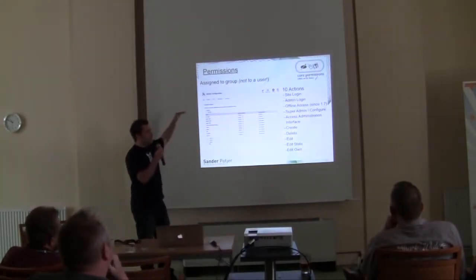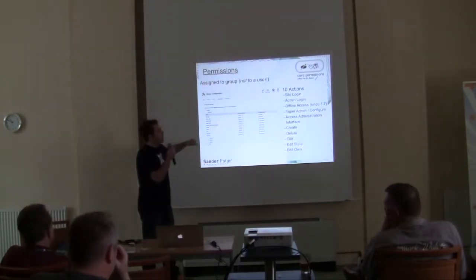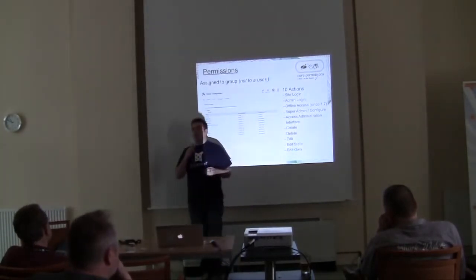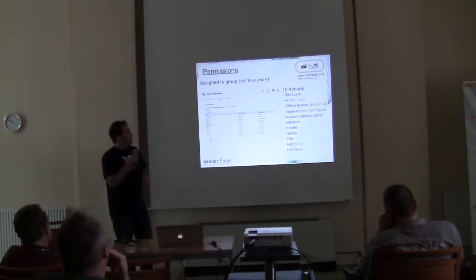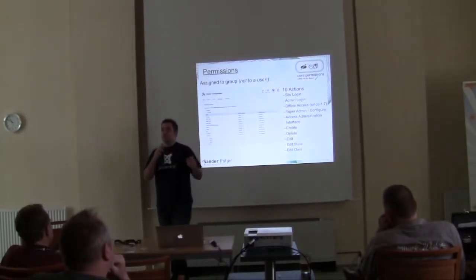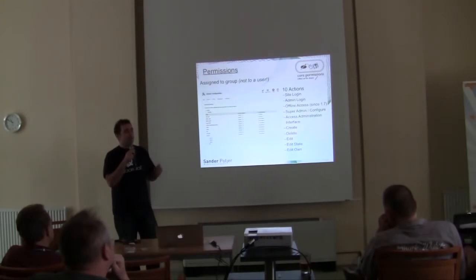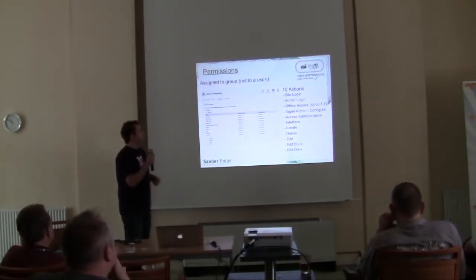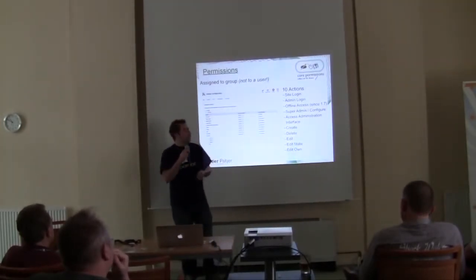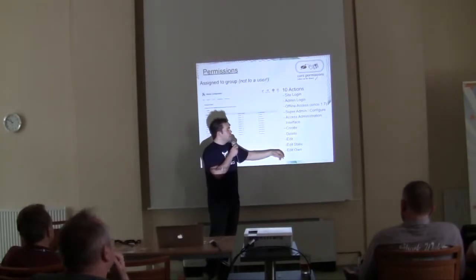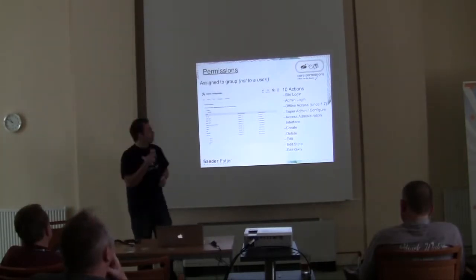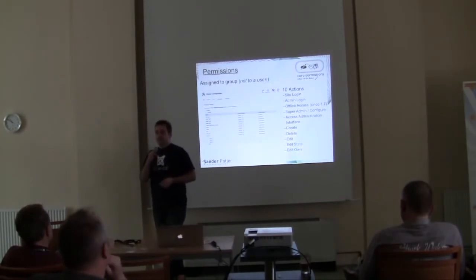Later on I will explain the level system and the kind of inheriting between the levels. The super admin is only available on the global configuration and later on it turns into the configure action — who's able to configure the access. Another action is the access administration interface: which user group is able to access a component, for example the article manager or the banner component. Then we have five actions focused on editing objects: create, delete, edit, edit state, and edit own. Edit state is changing an item to featured yes or no. Edit own is editing the articles the user created themselves.